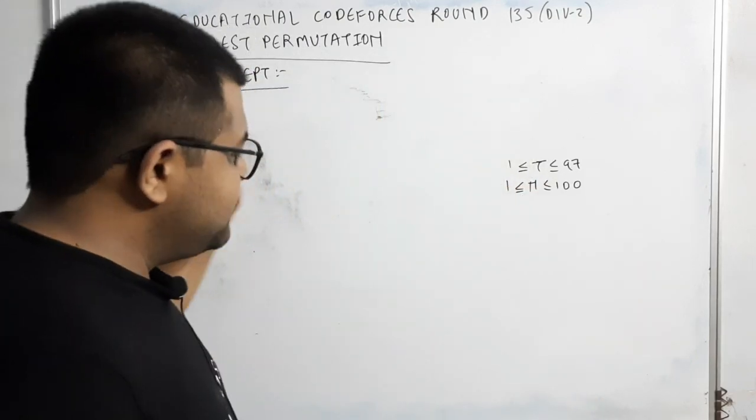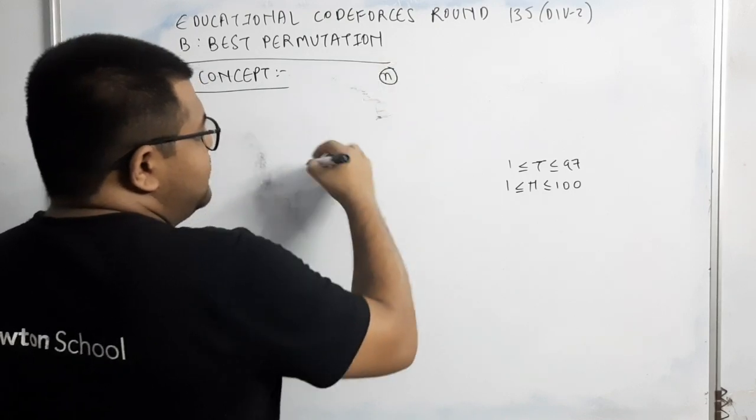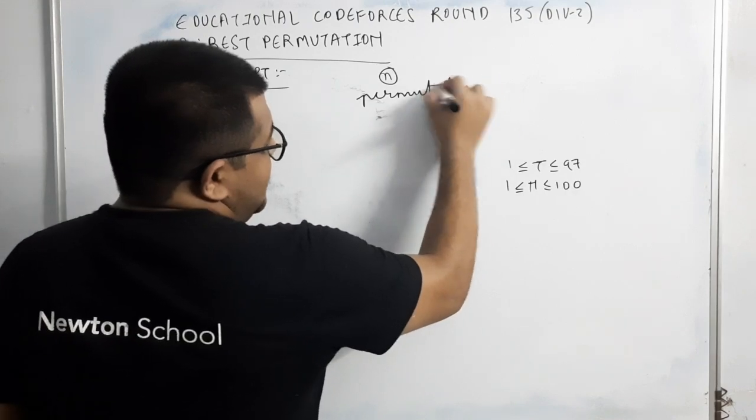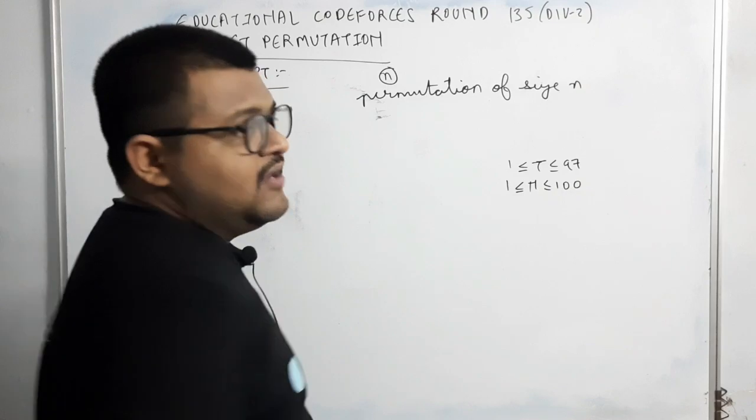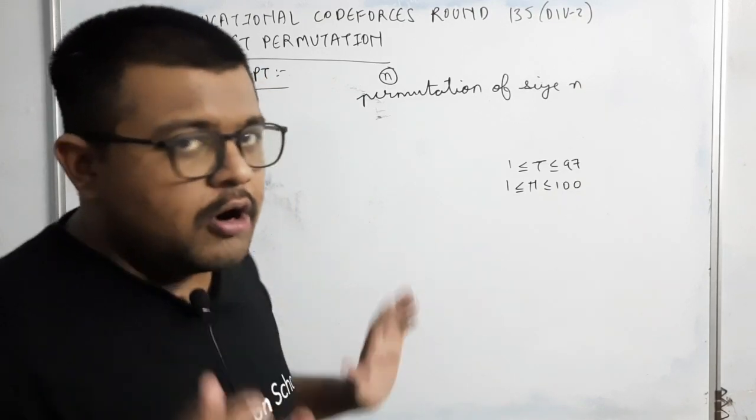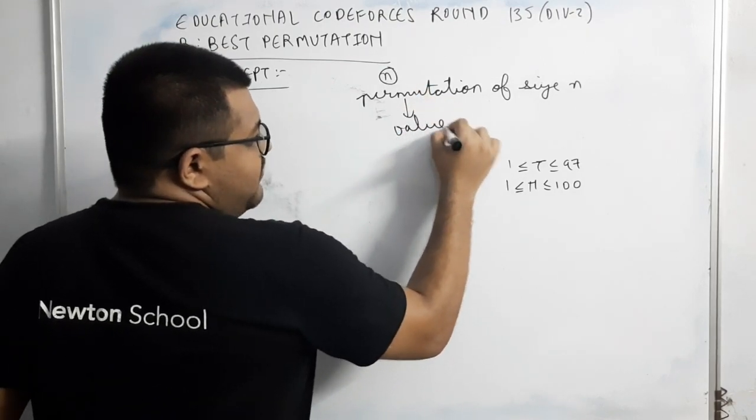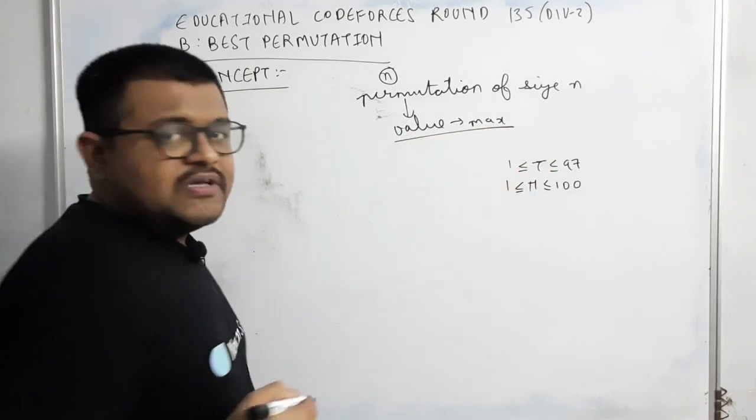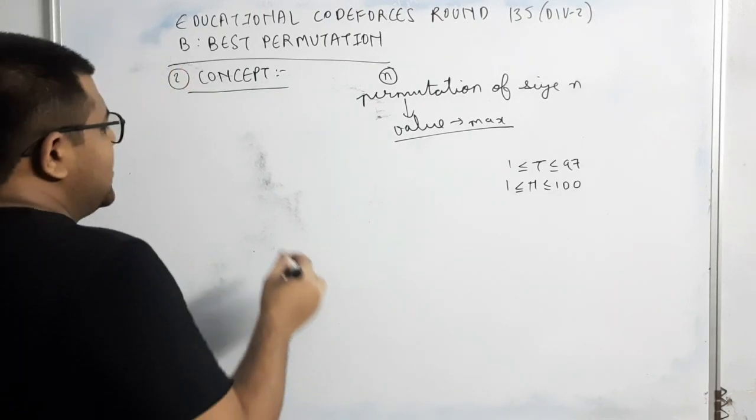Now talking about the concept part. What do we need to do? We have input one n. So we have permutation of size n to print. Permutation of size n ka matlab kya hai? Array of size n in which all the integers from 1 to n occur exactly once in any order. हमें permutation इस तरह से print करना है कि इस permutation की जो value होगी वो maximum होगी.